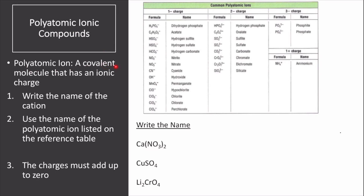A polyatomic ion is a covalent molecule that has an ionic charge. In this table we can see different polyatomic ions with a net charge of negative 1, negative 2, negative 3, and positive 1.